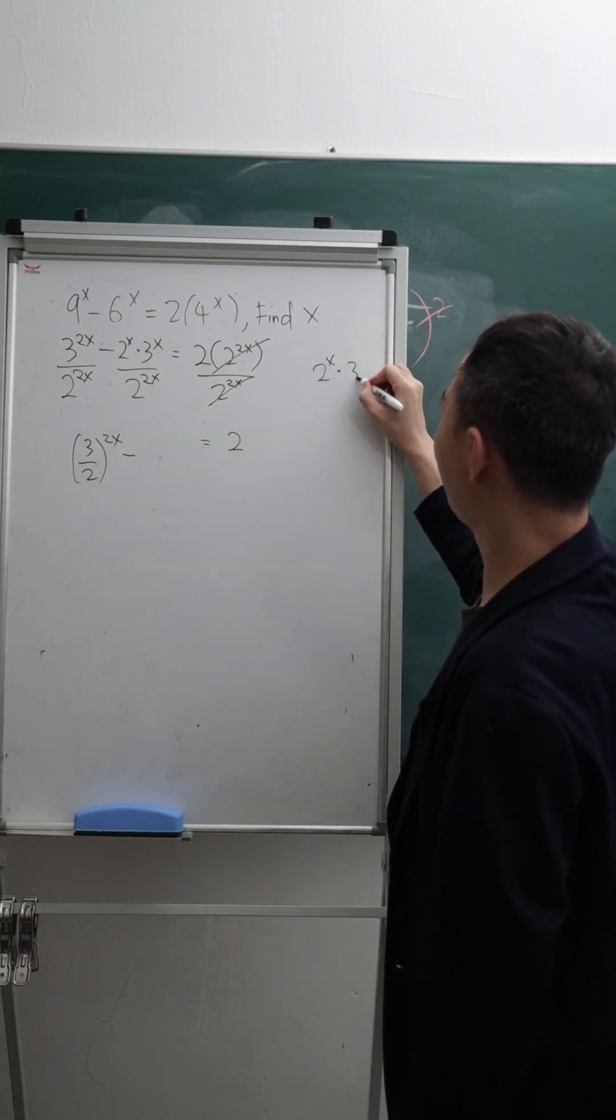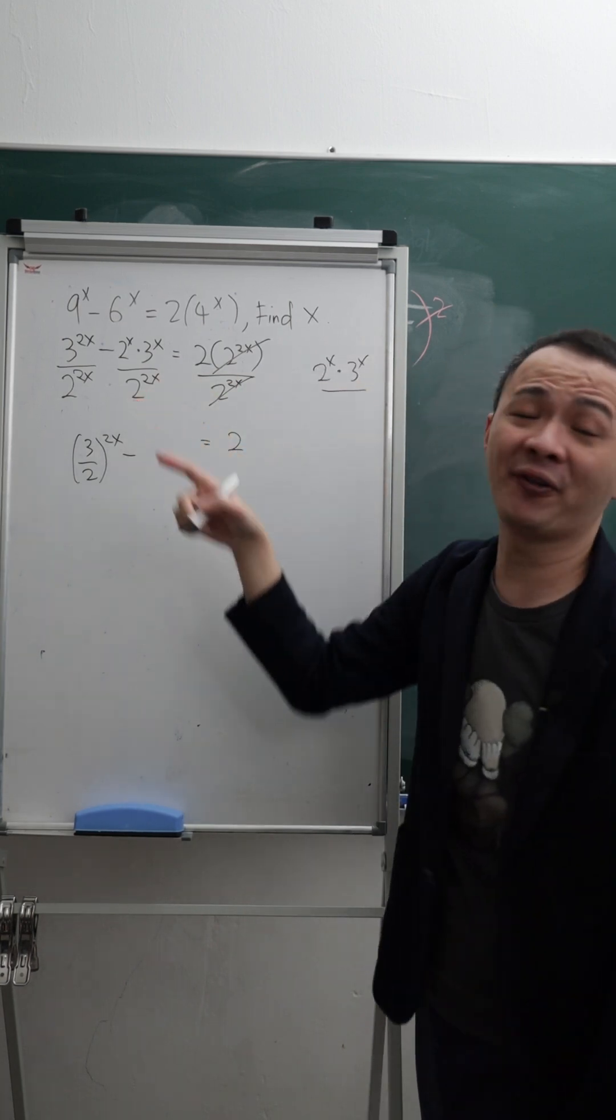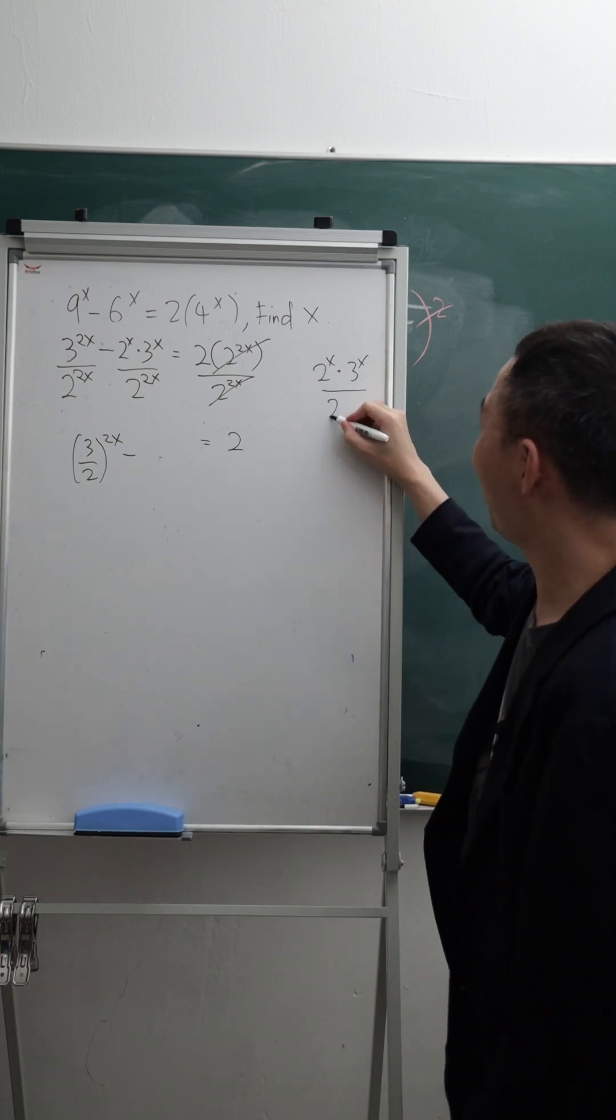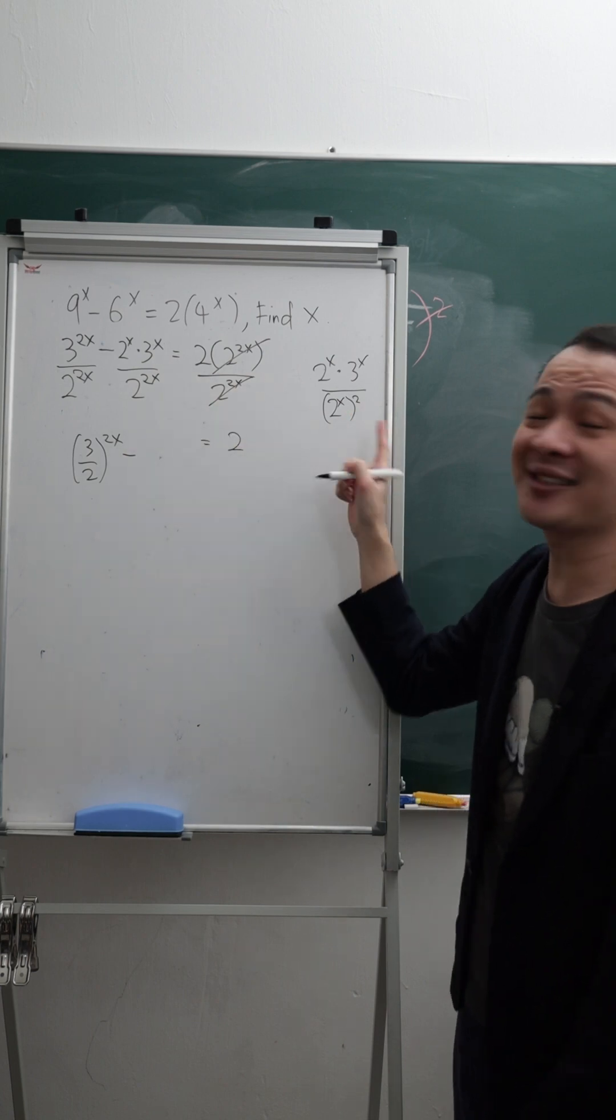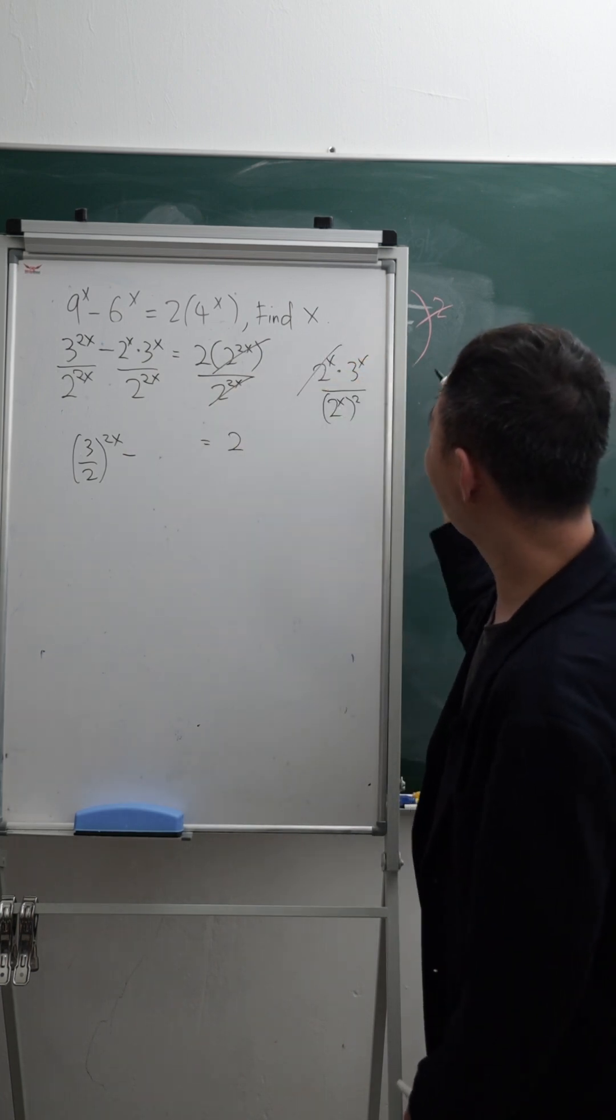If 2 power of x multiplied by 3 power of x divided by 2 power of 2x, can I say this one is 2 power of x squared? They are the same thing. 2 times x and x times 2, they are the same thing. So I can cancel this one. I still have one 2 power of x at the bottom.